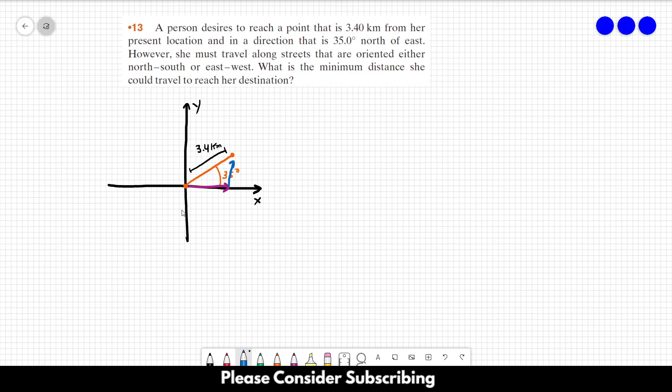So, you can see that the distance that she has to travel is just the sum of this X component plus the Y component over here of the orange vector. So, the distance, let's call it D,